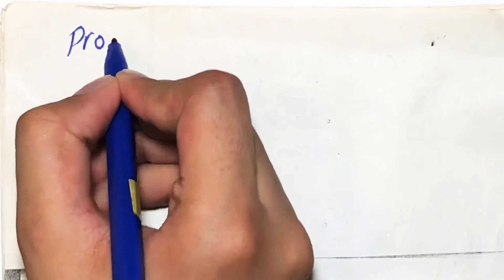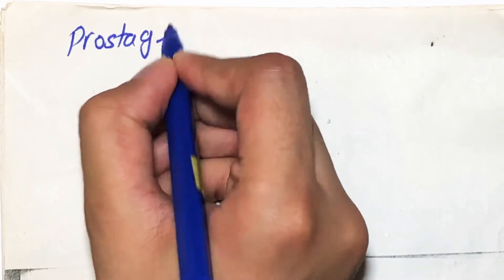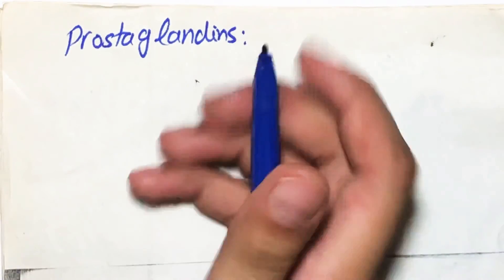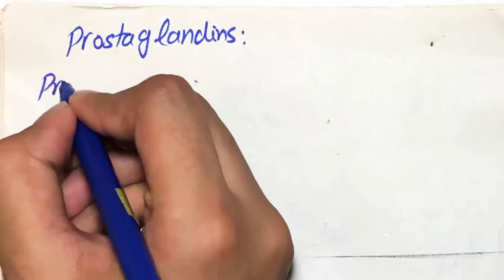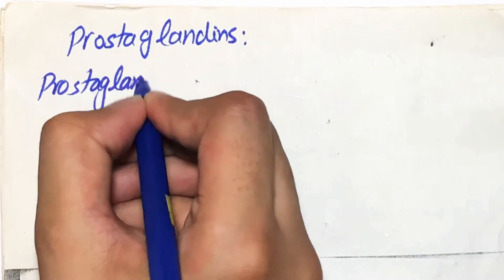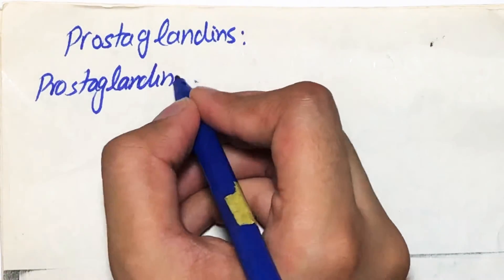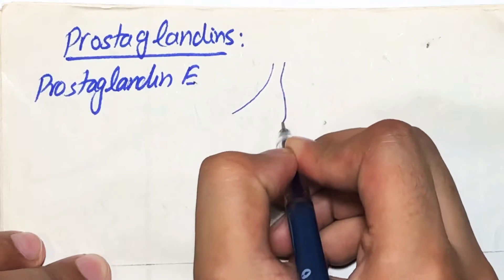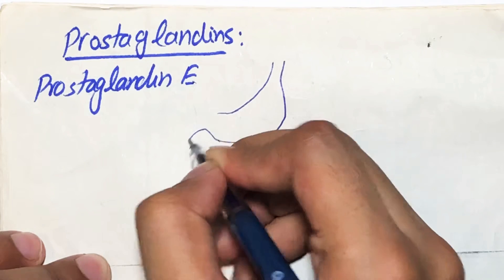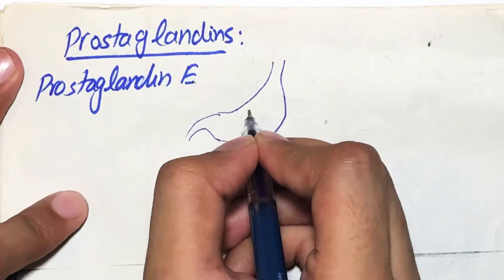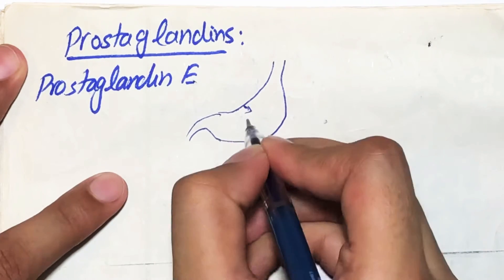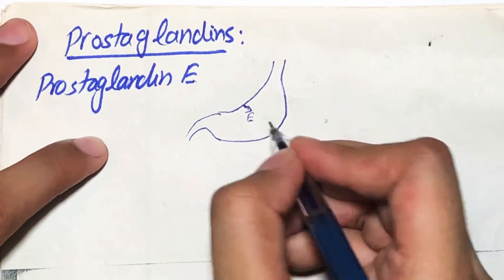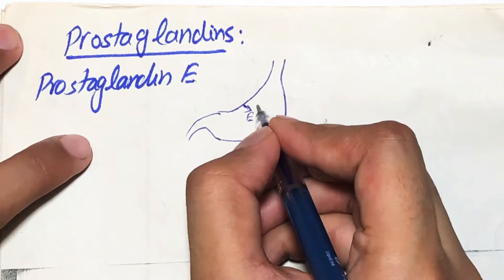In today's video we will be learning about prostaglandins and how they facilitate us in peptic ulcer. Prostaglandin E is released from the gastric mucosa — if this is the stomach, the mucosa of the stomach will release prostaglandins, prostaglandin E, which will cause inhibition of secretion of acid.